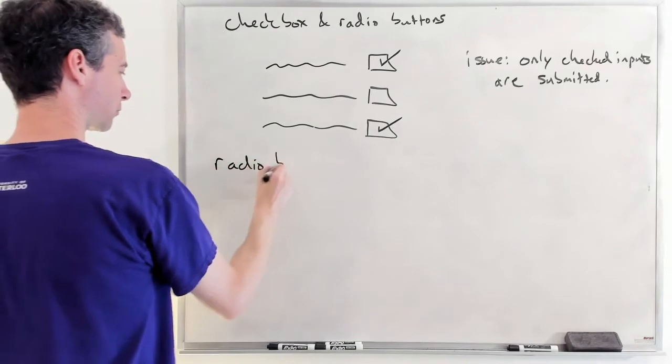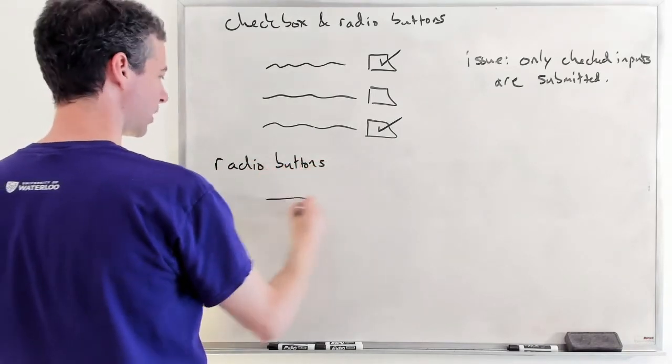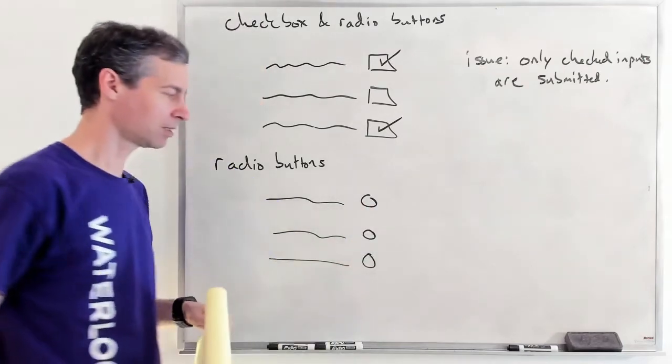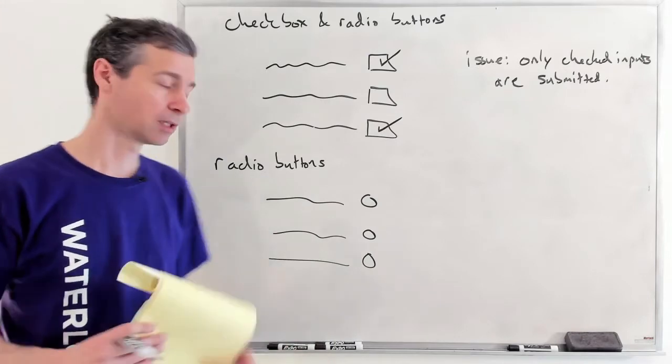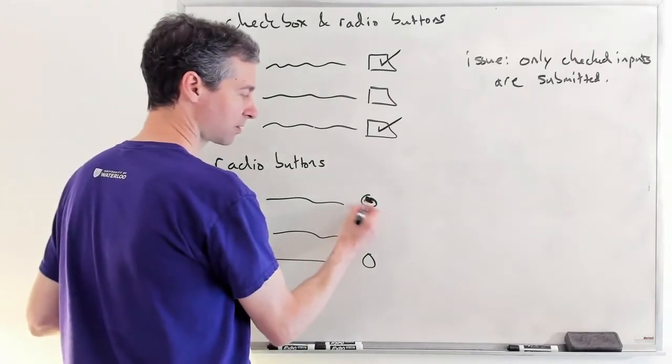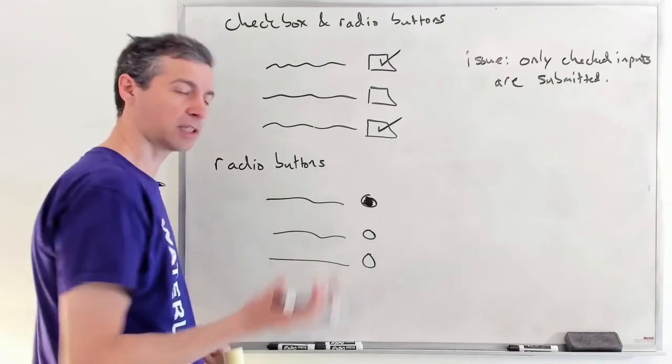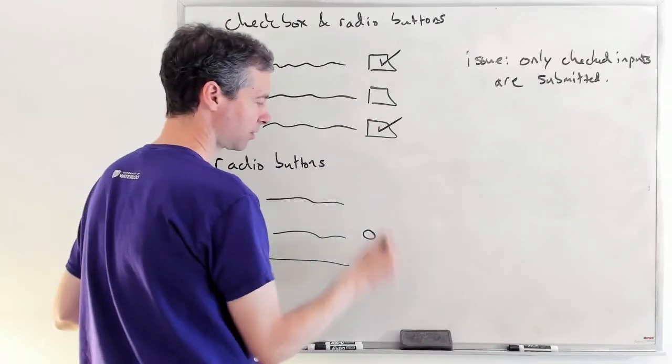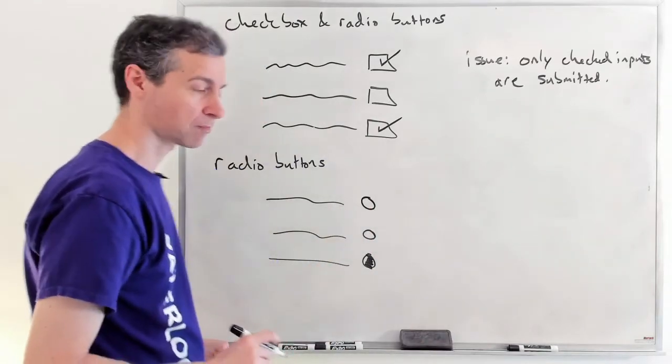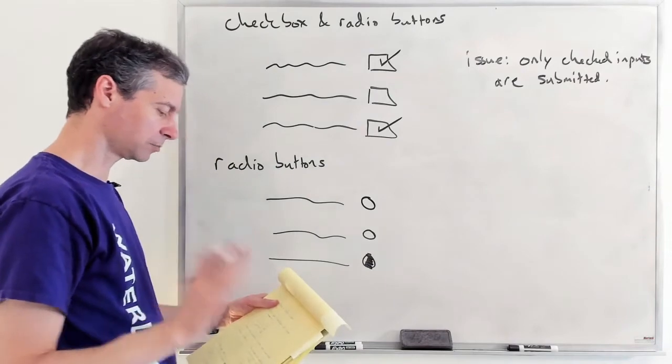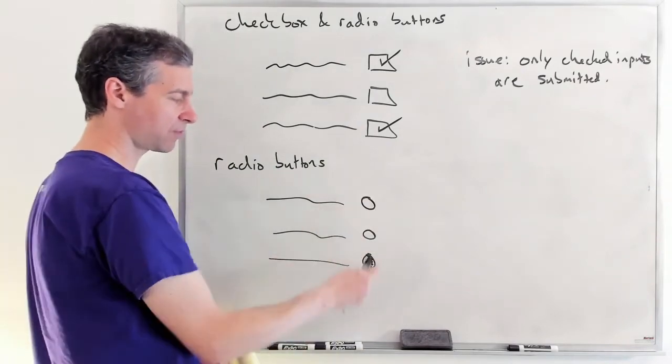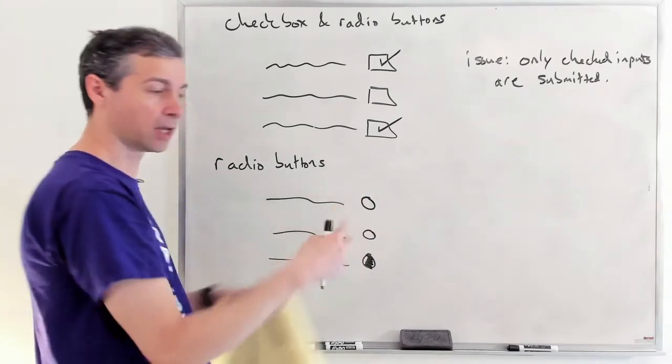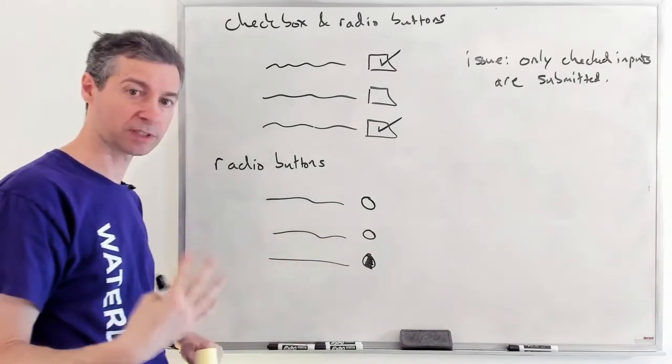Radio buttons. Radio buttons are again, you're going to see some text and you're going to see some circles and you can have them start off where none of them are selected. But if a user does select one of these, that's fine. But if a user selects another one, it causes the other one to not be selected anymore.